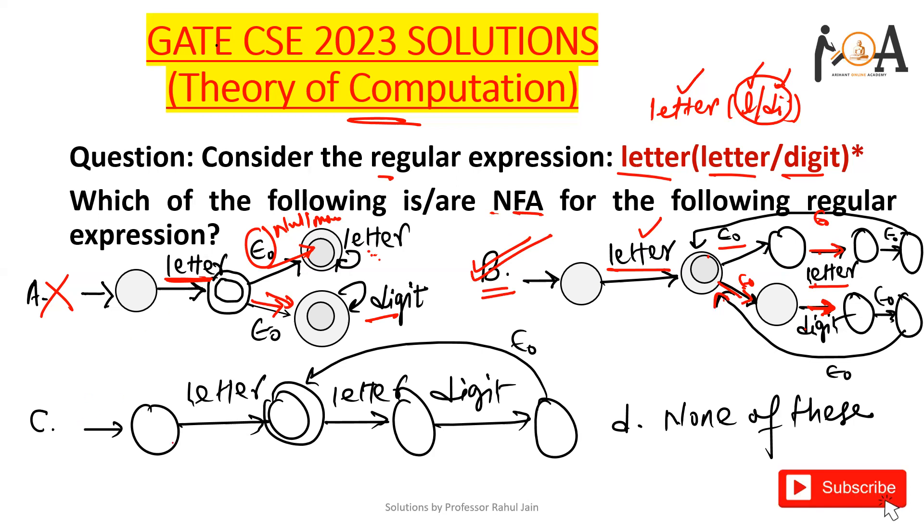Let's check out option number C. You can take letter here, not an issue. But you can see here after that if you are taking letter and you only want to take this letter, you cannot take it. Because let's say letter and after that only one letter you want to take - that is not possible here because this is not a final state.